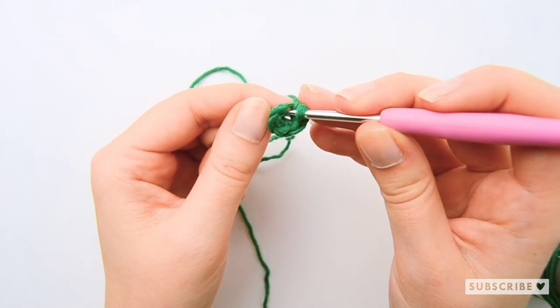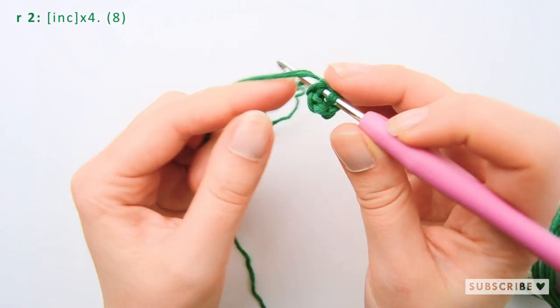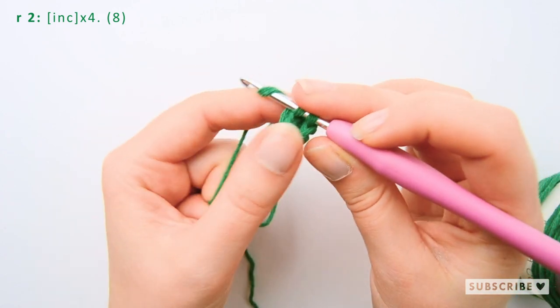On the second row we are going to crochet four increases, so one increase in each stitch until we have eight stitches.